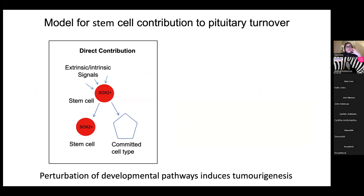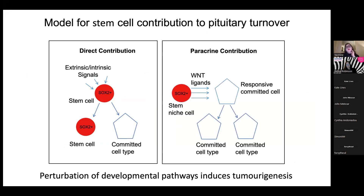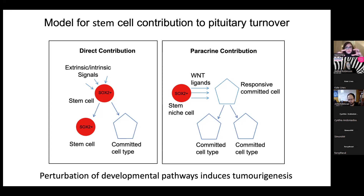To summarize: stem cells of an endocrine gland can contribute to pituitary turnover in two ways. First, by direct contribution where SOX2 cells self-renew and give rise to committed cell types and progenitors. Second, these cells also act as paracrine signaling hubs, sending Wnt signals to neighboring cells to drive proliferation. Perturbing these developmental pathways can lead to tumorigenesis, and this concept is key to understanding the pathogenesis of neuroendocrine tumors such as pheochromocytomas and paragangliomas.